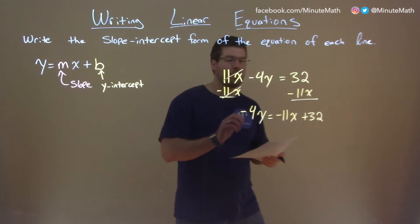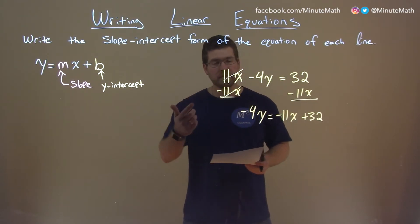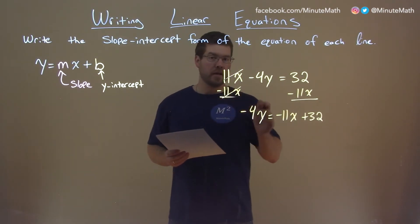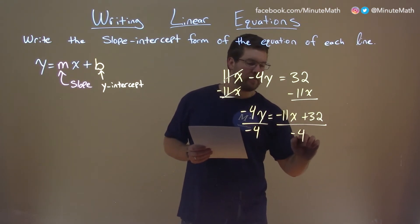We have a negative 4 here that's being multiplied by y. Opposite of multiplication is division, divide both sides by negative 4. Negative 4 here, and make sure you get both parts here, negative 4.